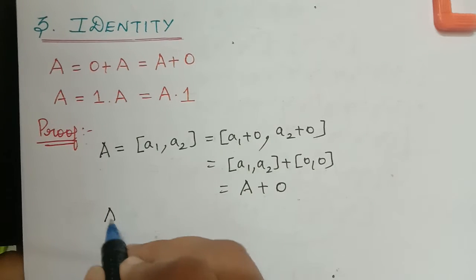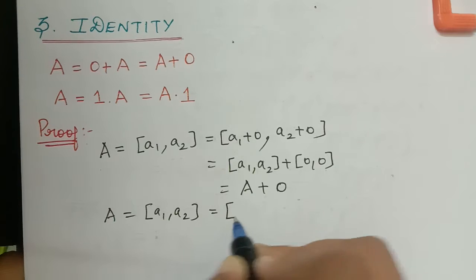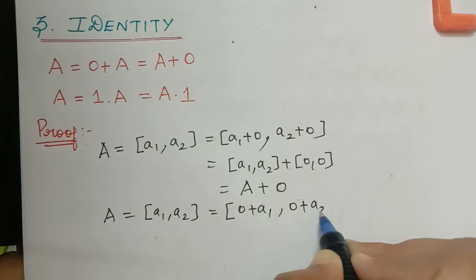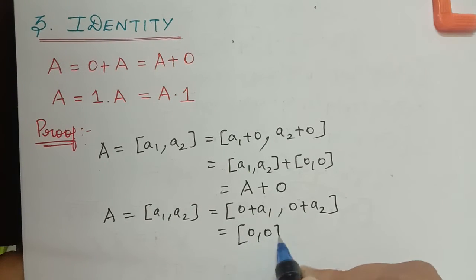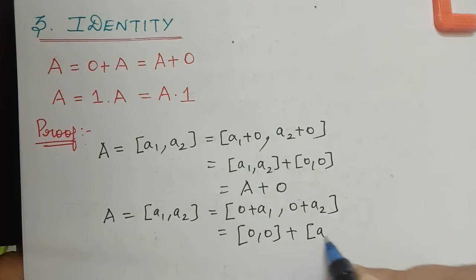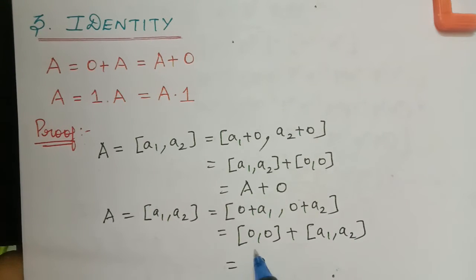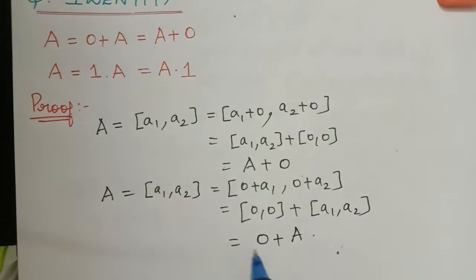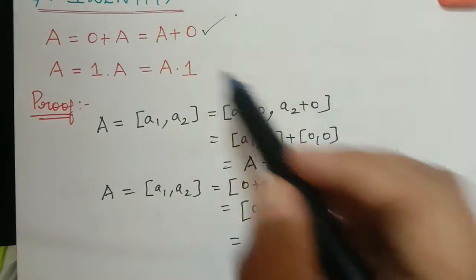Also we can write a, which is equal to [a1, a2], as equal to [0 + a1, a2]. So this can be written as [0, 0] plus [a1, a2]. But what is [0, 0]? It is the closed interval [0, 0], so this is 0 plus a. So we have proved that a equals 0 plus a and a plus 0. The first identity property is proved.